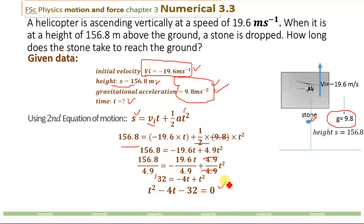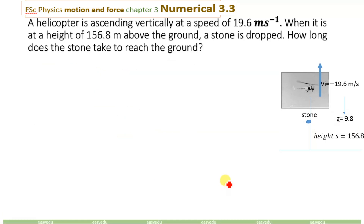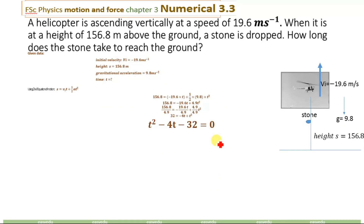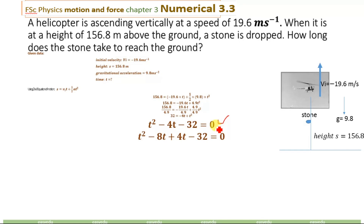This is a second-degree quadratic equation. We will solve this equation for the value of t. There are two methods to solve this equation: the first method is by factorization, which we will use; the second method is by using the quadratic formula, which is (minus b ± √(b² minus 4ac)) divided by 2a. We will use the factorization method, which is very simple. We just have to rewrite minus 4t as minus 8t plus 4t.